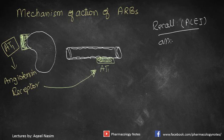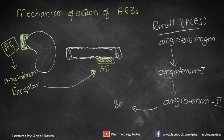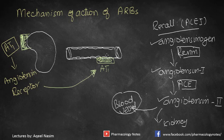To recall: angiotensinogen, secreted by the liver, is converted into angiotensin 1, which is then converted into angiotensin 2. Angiotensin 2 is responsible for binding to blood vessels as well as the kidneys. Angiotensinogen is converted by renin, and ACE acts upon angiotensin 1 to convert it into angiotensin 2.